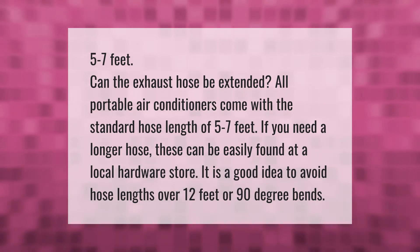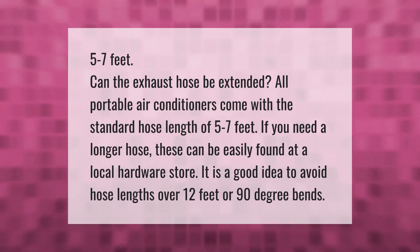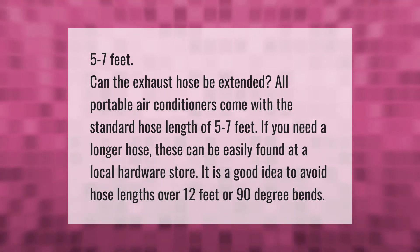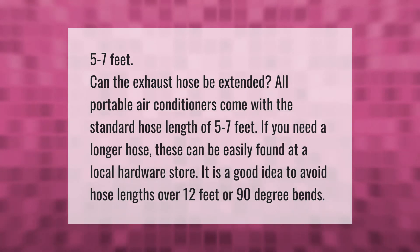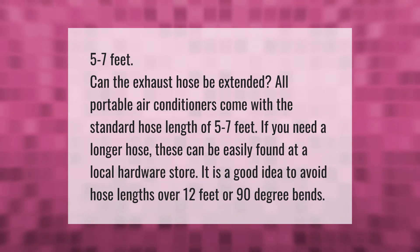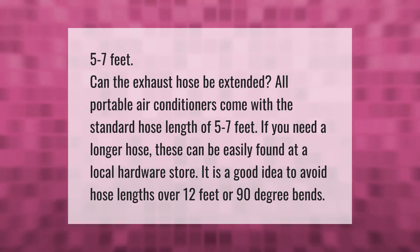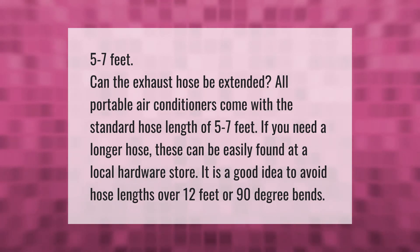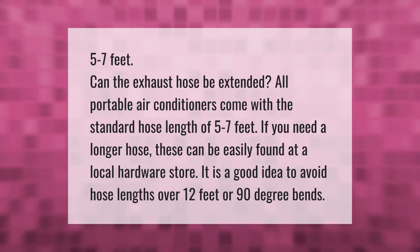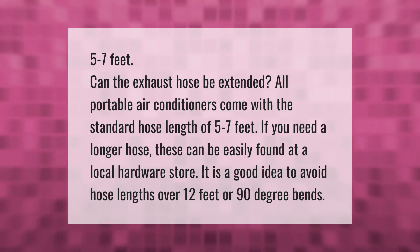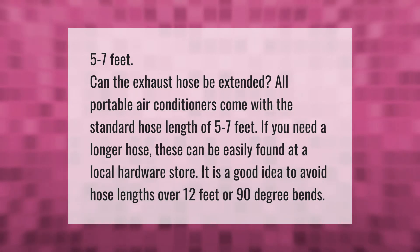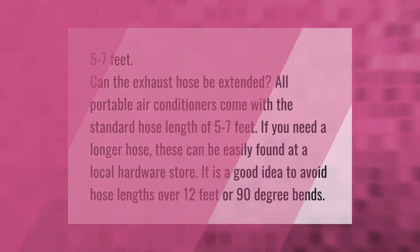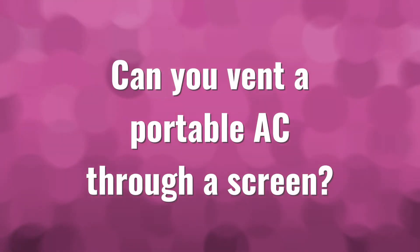Can the exhaust hose be extended? All portable air conditioners come with a standard hose length of five to seven feet. If you need a longer hose, these can be easily found at a local hardware store. It is a good idea to avoid hose lengths over 12 feet or 90-degree bends.